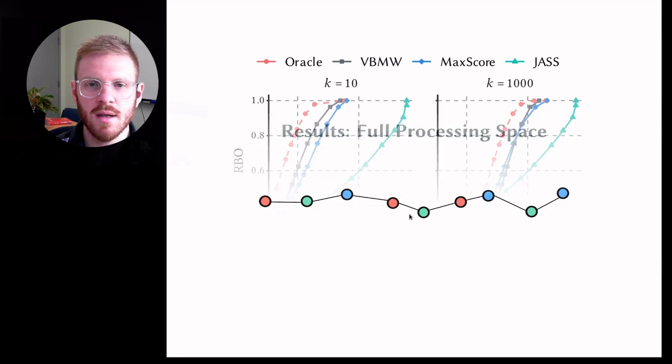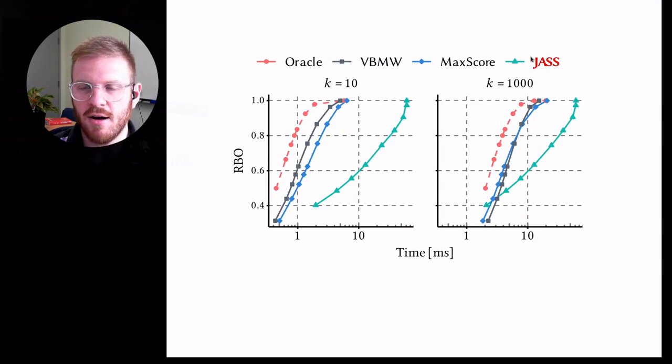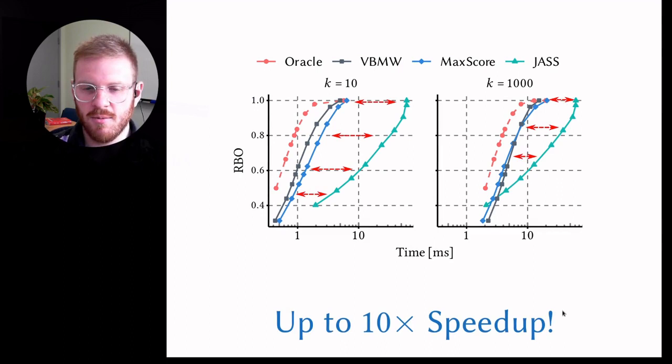In the full processing space, we have JAS, which is a score at a time anytime ranking system. We also have an oracle, which is if we knew which ranges to visit in which order. Then we have our two instantiations of the anytime approach. Basically, we see that we can achieve an up to 10 times speed up on the current state of the art in anytime ranking.